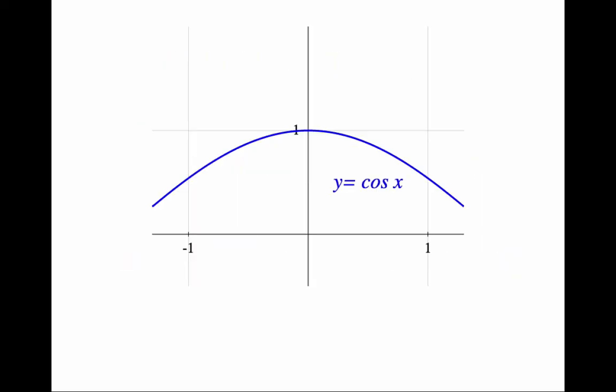Here is the graph of cos(x). It is nice and continuous at 0, with value 1. And here is the graph of 1 over cos(x). It is also nice and continuous at 0, with value 1.